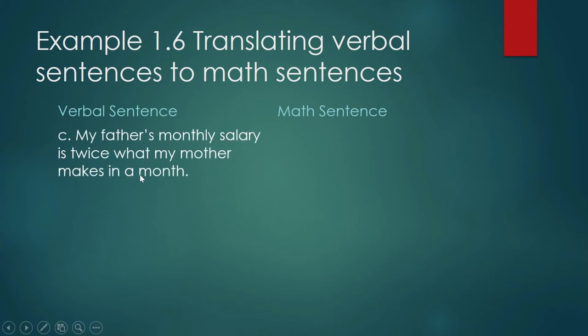Letter C. My father's monthly salary is twice what my mother makes in a month. Their combined salary is 27,000 pesos. Let us write this in math sentence. Your father's monthly salary is twice what your mother makes in a month. So what operation is involved there? So it is the operation of multiplication.